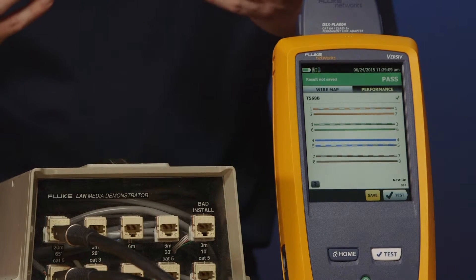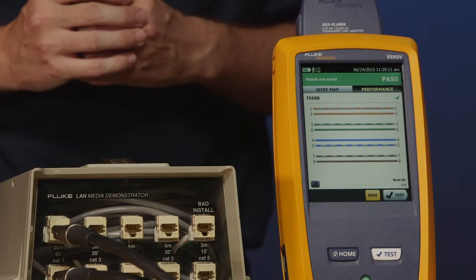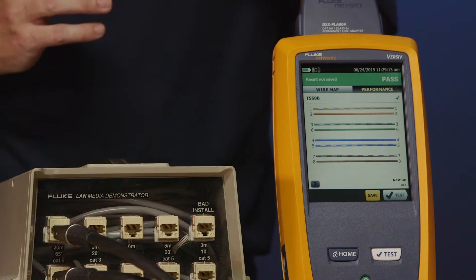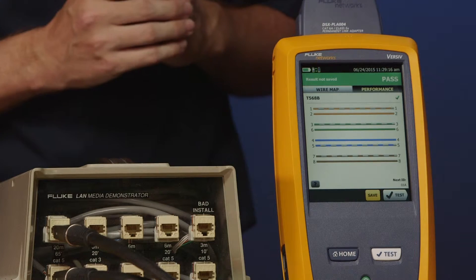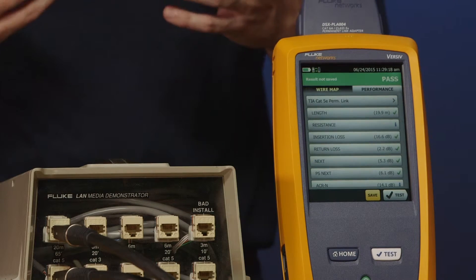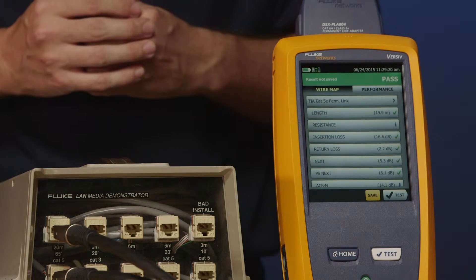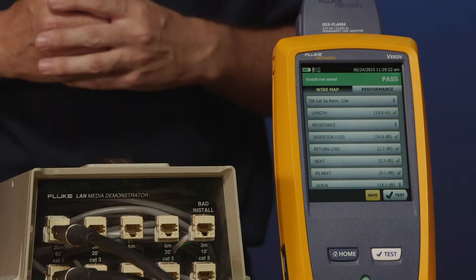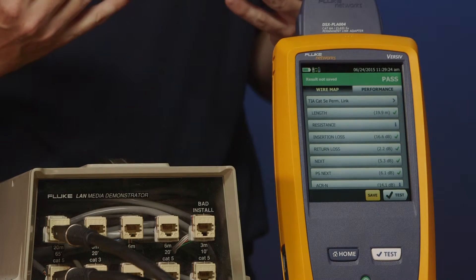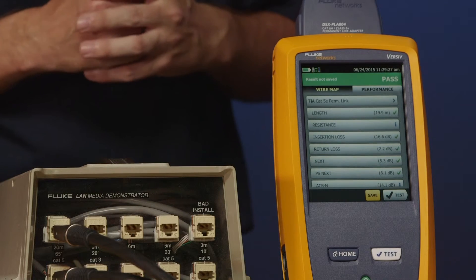So this tester passed. We see the pass on the top right hand corner. The first thing that we see on there is wire map. Amanda, go ahead and tap performance for me. Now we see what's very familiar to DTX owners is all the various parameters required for Cat 5e. Everything passes here, so we're good. Go ahead and hit save.